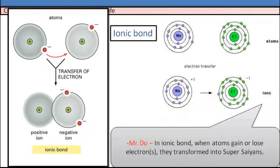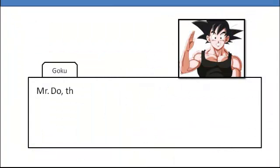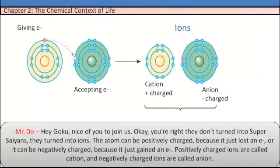In an ionic bond, when atoms gain or lose an electron, they transform into ions. The atom can be positively charged because it lost an electron, or it can be negatively charged because it gained an electron.